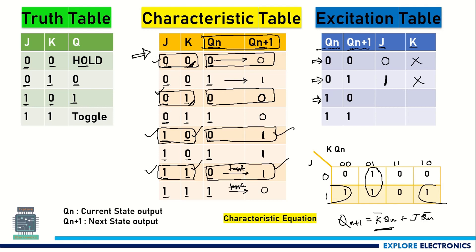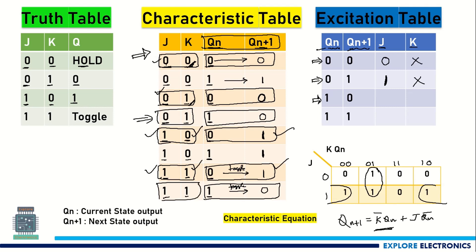Now for the 1→0 transition, Qn=1 and Qn+1=0. Looking at the table for 1,0 — here is 1,0 and here also 1,0. For these two cases we look at the J and K values: they are 0,1 and 1,1.